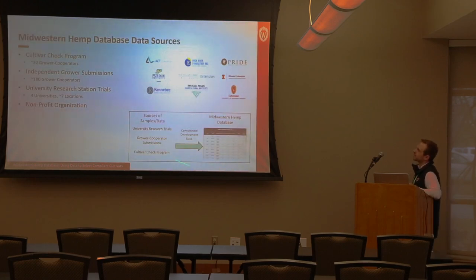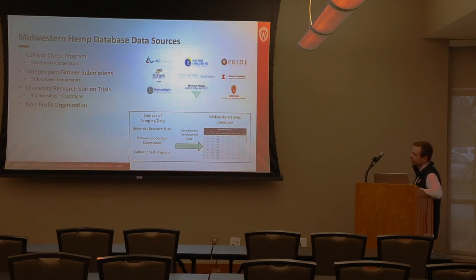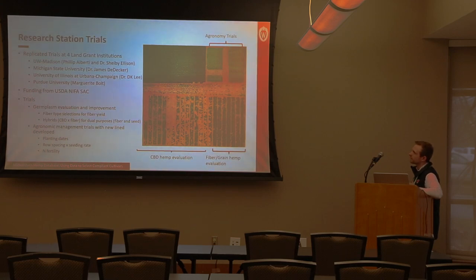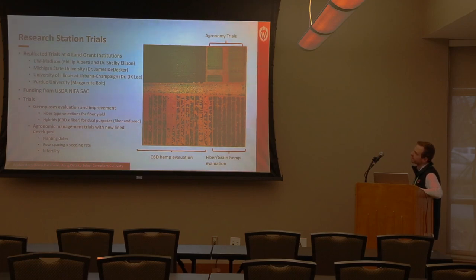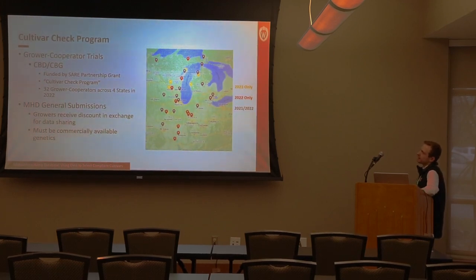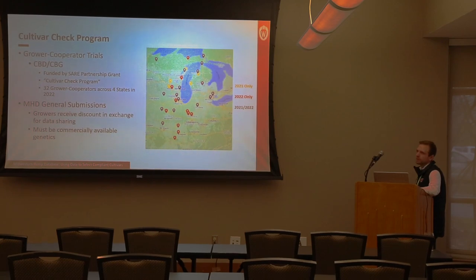The Midwestern Hemp Database has three sources of data: university research trials across the Midwest, grower cooperator submissions, and the Cultivar Check Program — a series of grower cooperator trials across the Midwest. Research station trials are conducted at four universities: University of Illinois at Urbana-Champaign, Michigan State University, University of Wisconsin, and Purdue University. The Cultivar Check Program had over 32 growers contributing data in 2022, with varieties sent to growers who submitted samples for analysis, and results shared in the database.